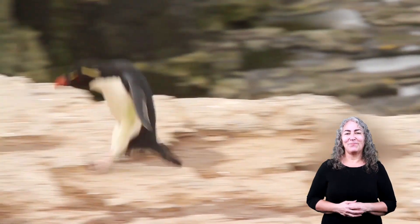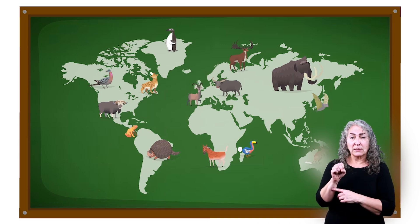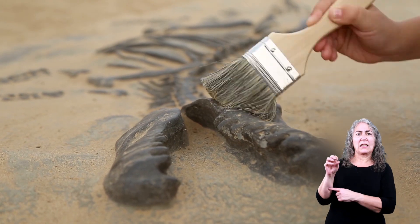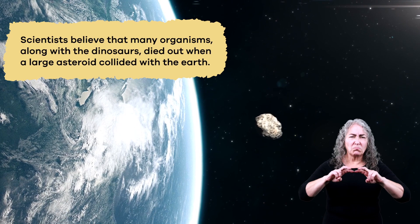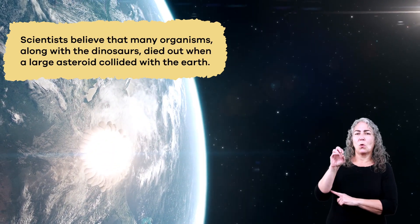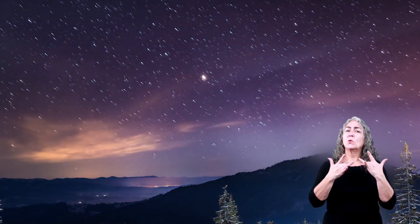Extinct means that certain kinds, or species, of animals no longer live anywhere in the world — they have died out. Sometimes, like with the dinosaurs, a huge event causes something called a mass extinction, which happens quickly over a very short period of time. Scientists believe that many organisms, along with the dinosaurs, died out when a large asteroid collided with the earth. This is an example of mass extinction.